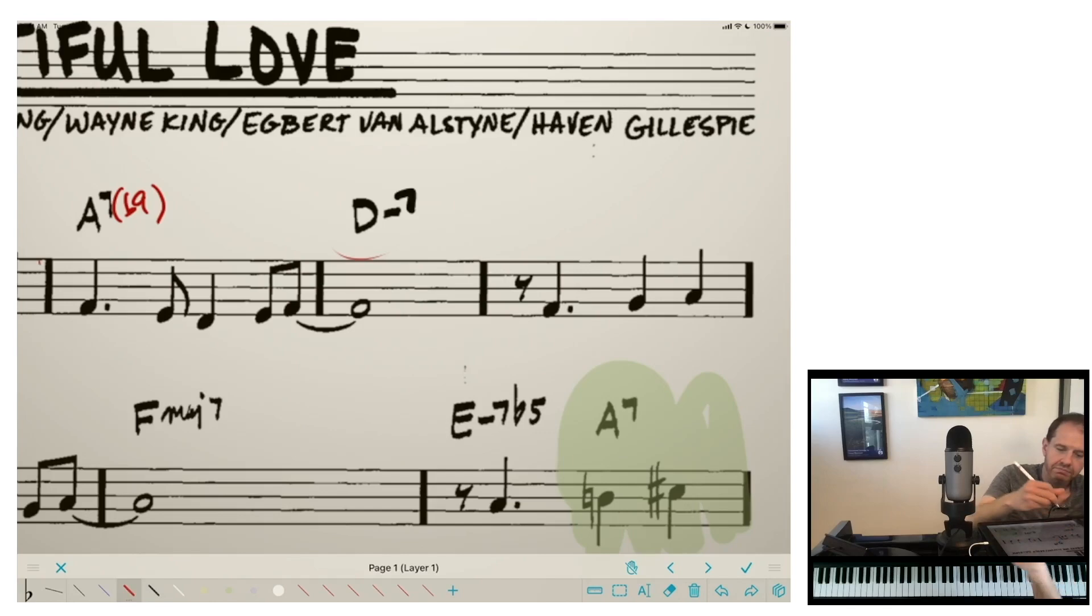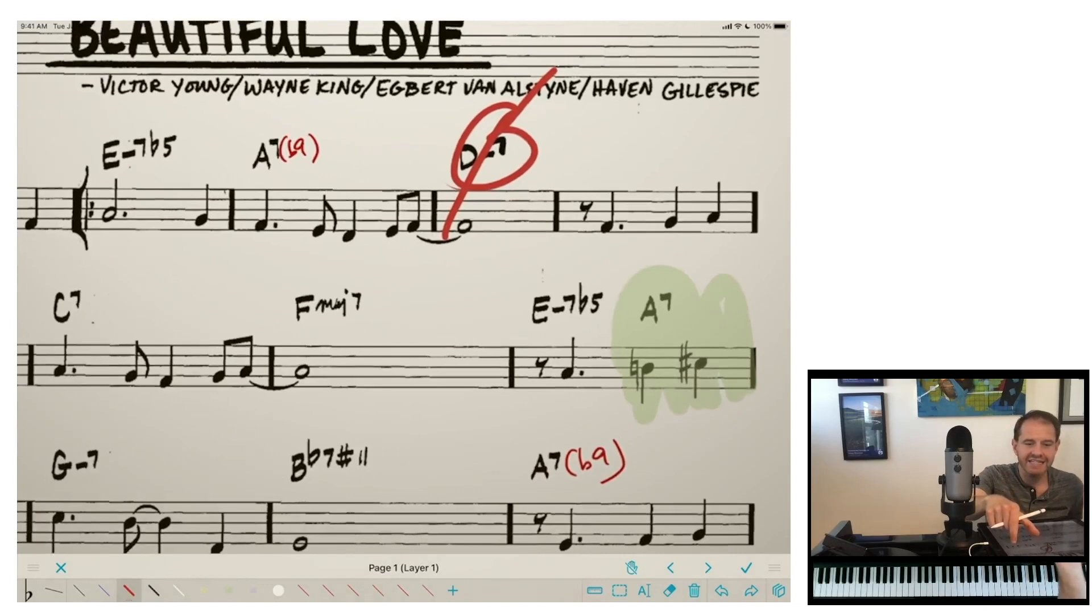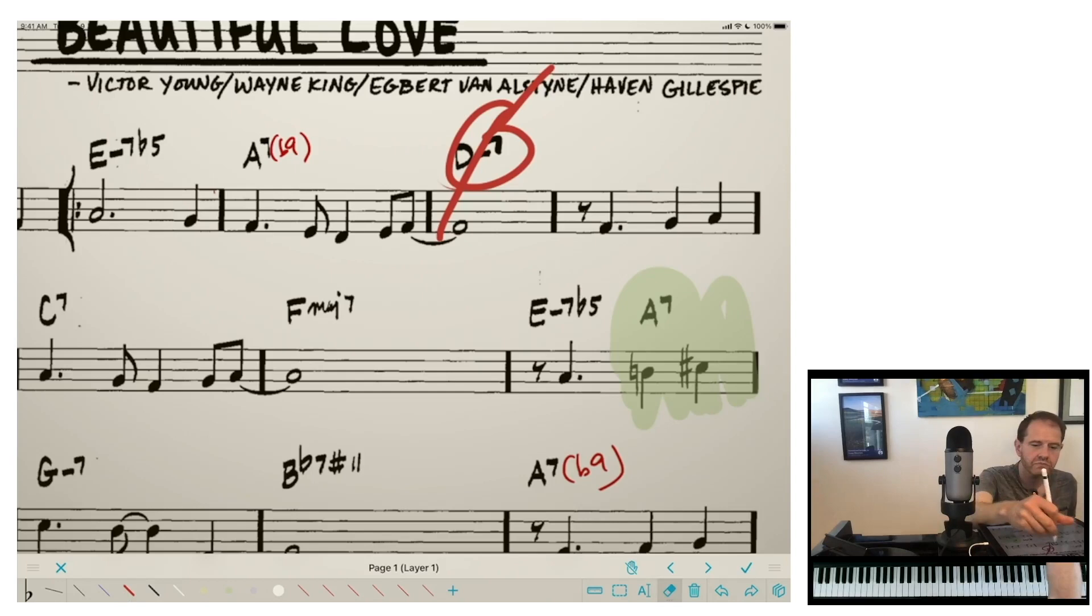So what you definitely should not do is play D minor 7. That would be, in my opinion, kind of the worst option. Because, again, we're in the key center of D minor at this moment. And D minor 7 is not part of the key center of D minor. Okay. What could you play?